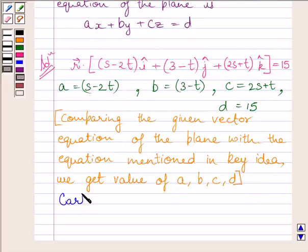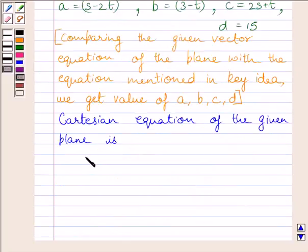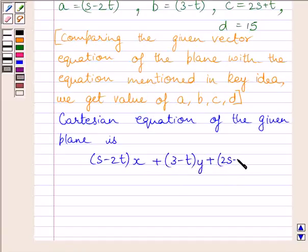So we can write Cartesian equation of the given plane is S minus 2T multiplied by X plus 3 minus T multiplied by Y plus 2S plus T multiplied by Z is equal to 15.